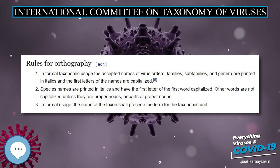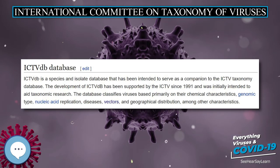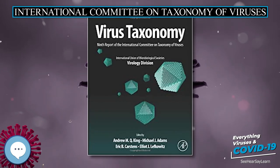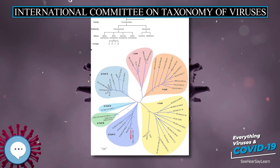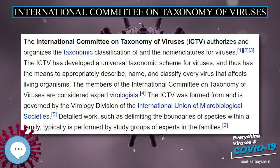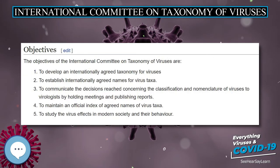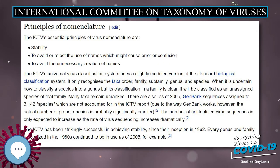ICTV reports. The ICTV has published reports of virus taxonomy about twice a decade since 1971. The ninth ICTV report was published in December 2011, and the content is now freely available through the ICTV website. Beginning in 2017, the 10th ICTV report will be published online on the ICTV website and will be free to access, with individual chapters updated on a rolling basis. The 2018 taxonomy is available online, including a downloadable Excel spreadsheet of all recognized species.